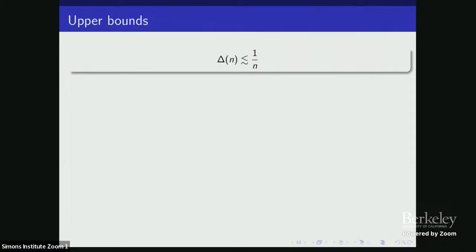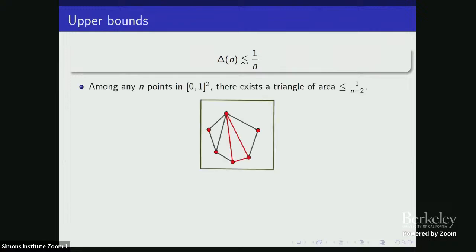Today's talk will be about upper bounds. Let's switch gears and instead of trying to construct configurations with all triangles having large areas, let's start with an arbitrary configuration and ask what small area triangle can always be found. Starting somewhere with an easy bound: given N points, there's always a triangle of area at most one over N. One way to see this: take a point and draw triangles from it to the rest, drawing N minus two triangles with disjoint interiors. They add up to total area at most one, so there is a triangle of area at most one over N minus two.